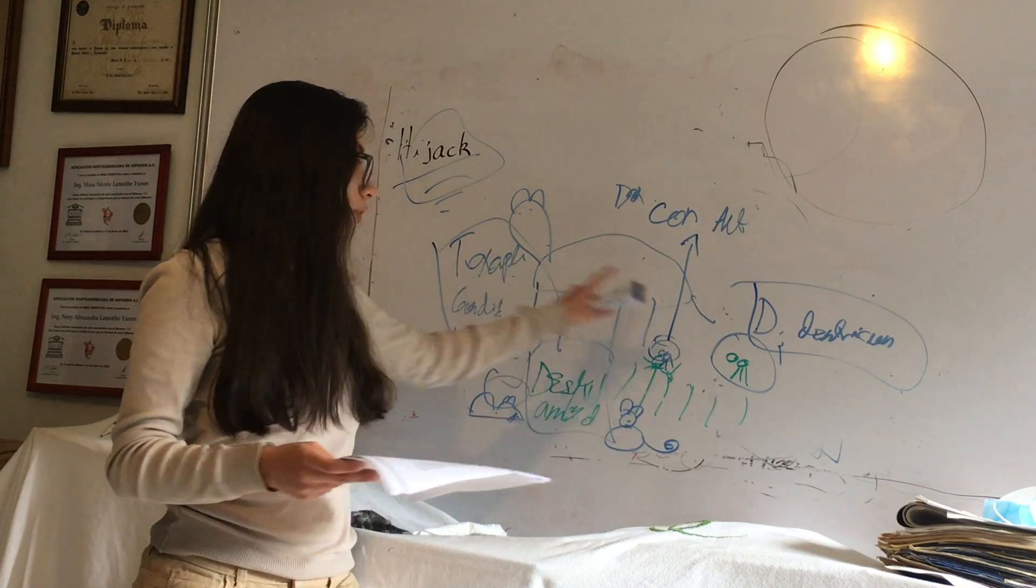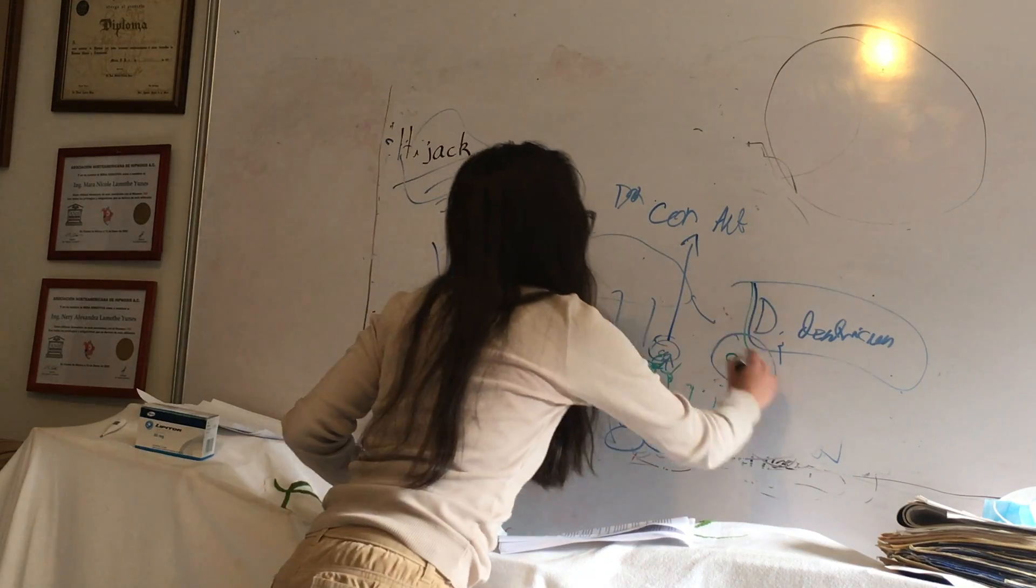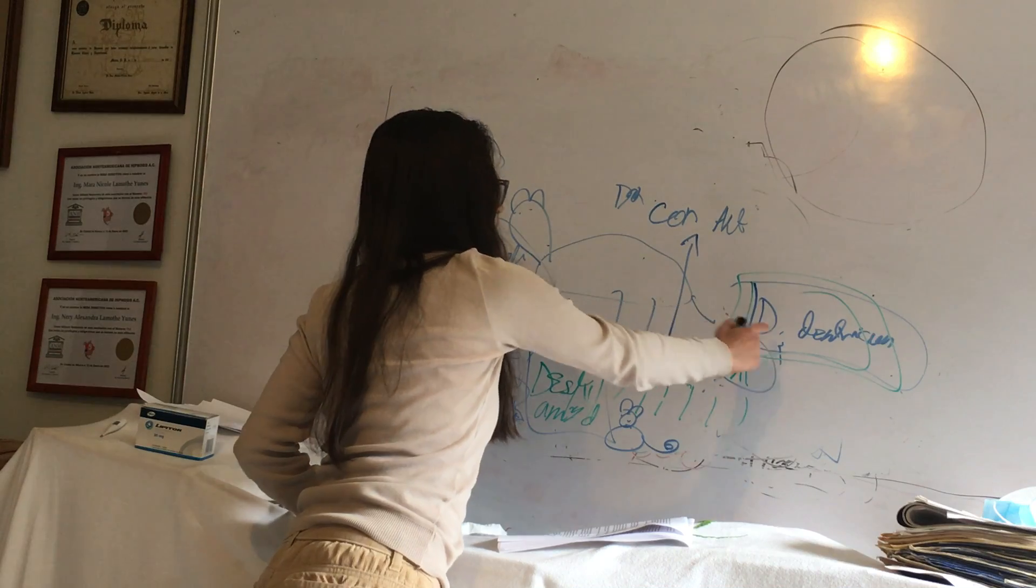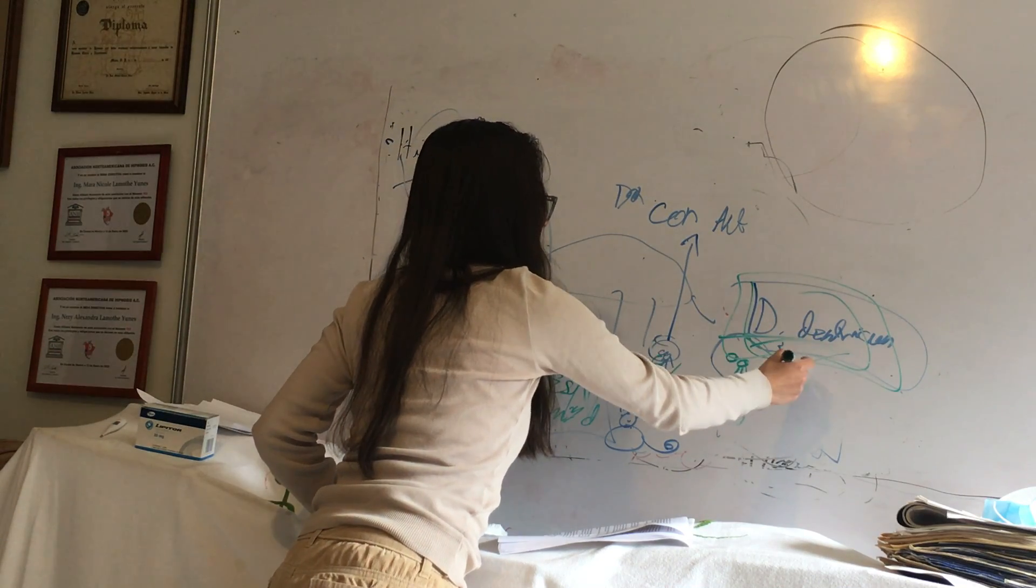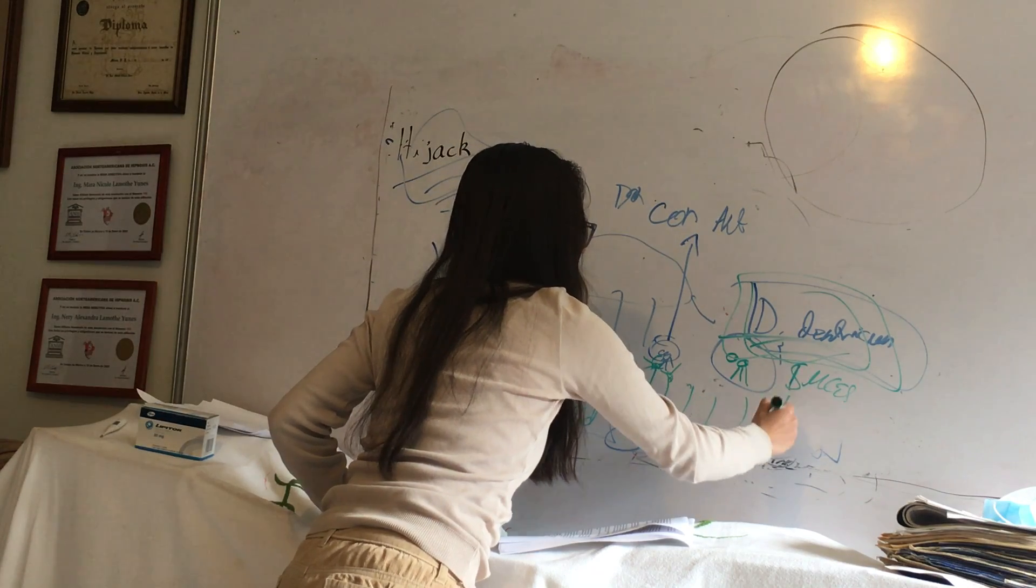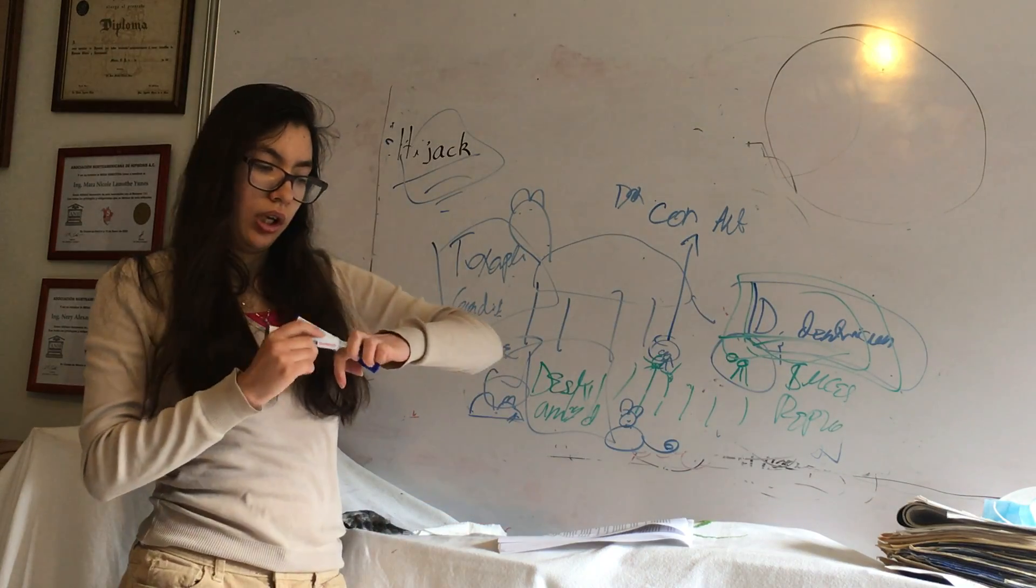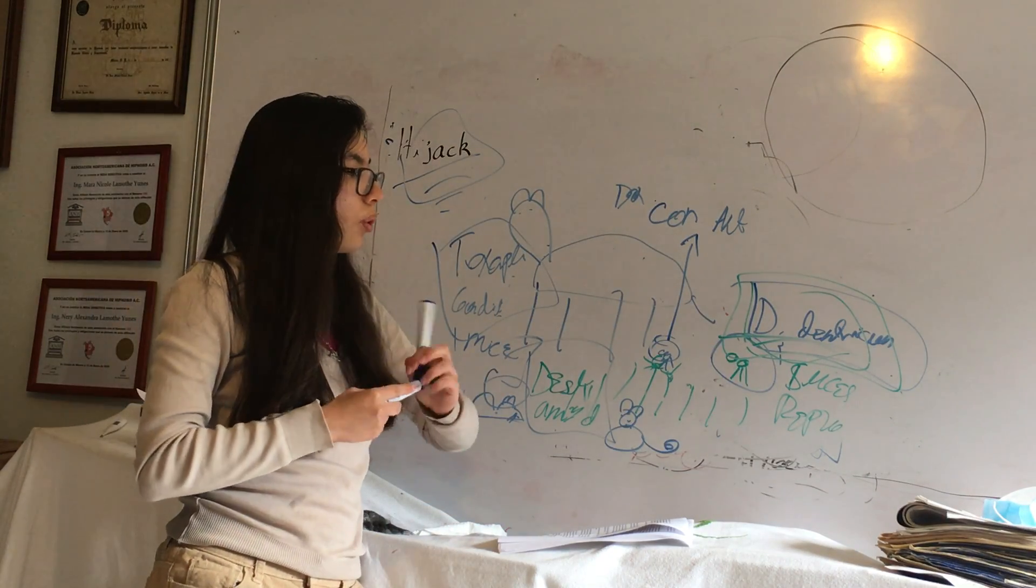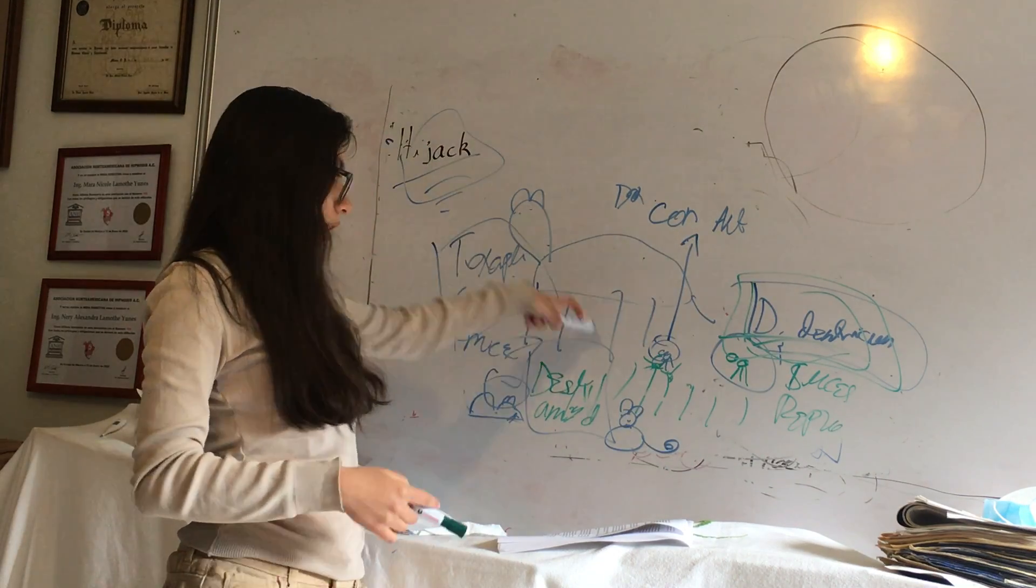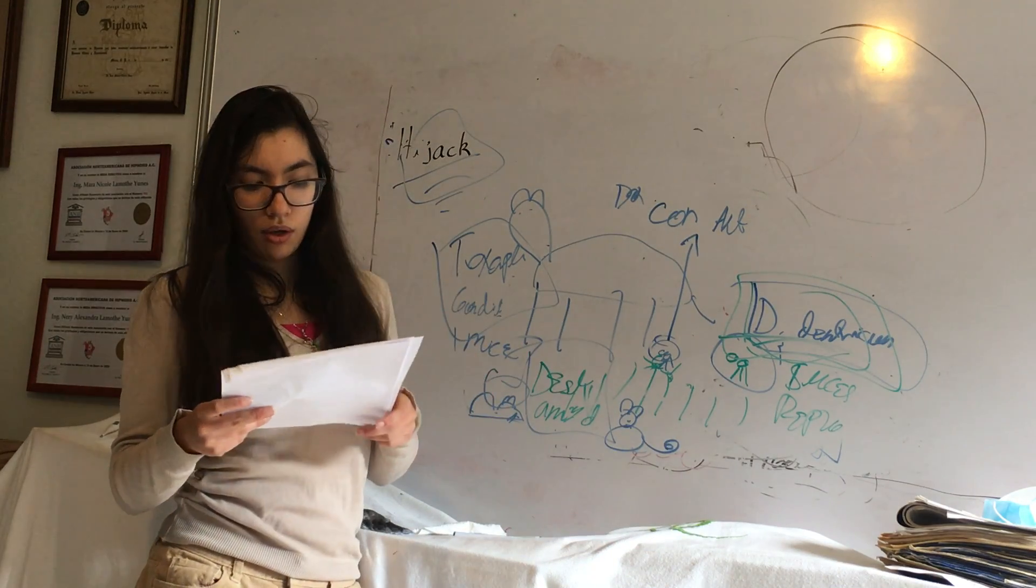This hijacking of the ant in the case of the dendriticum is of benefit to the dendriticum. This process makes the parasite, the dendriticum, be more successful in terms of reproduction. That means that the dendriticum in the next generation is going to have more copies of its genes in the next generation by doing this process of hijacking the ant or the mind of the ant or the behavior.